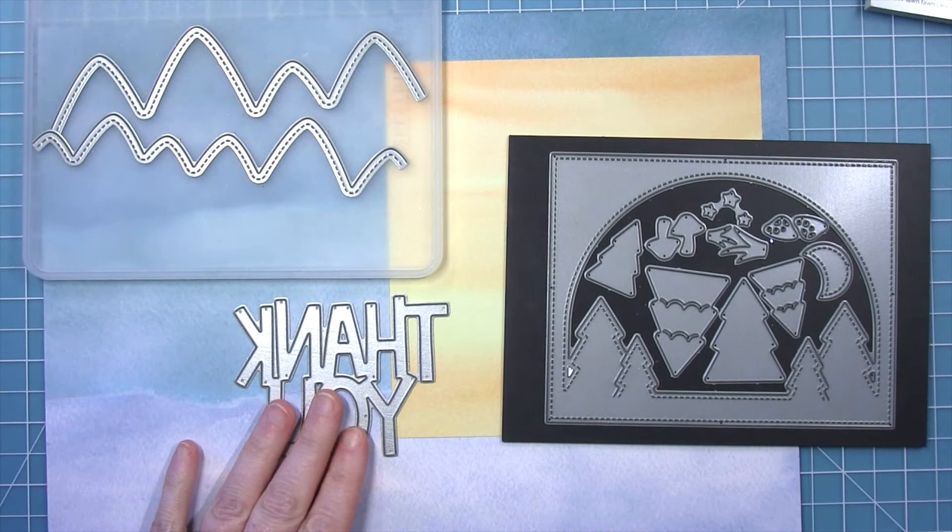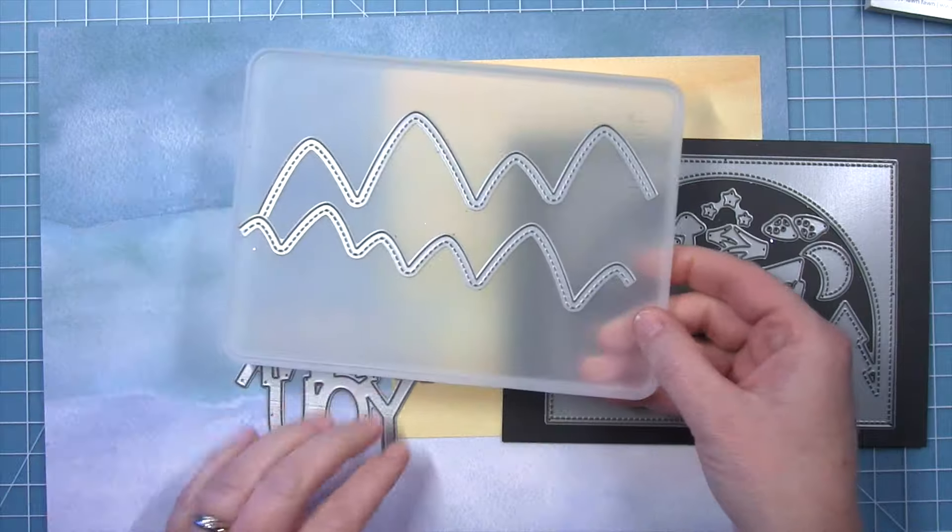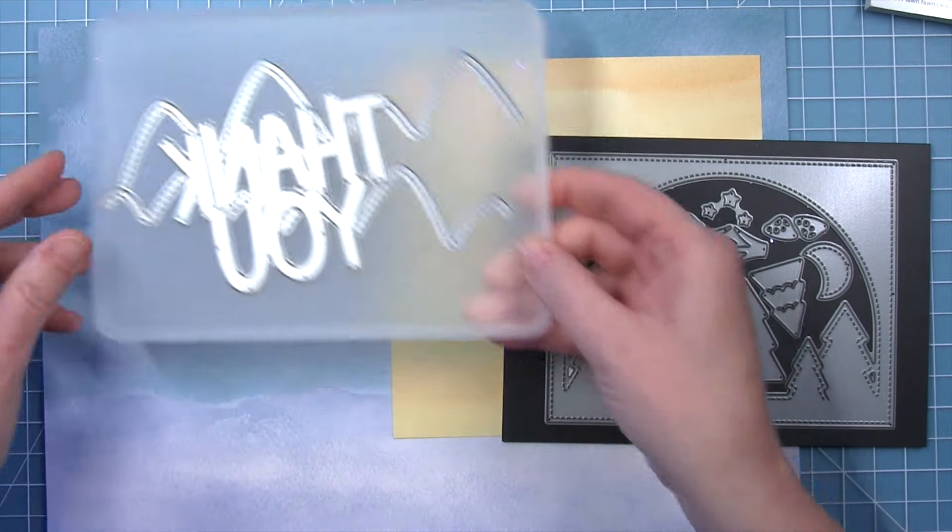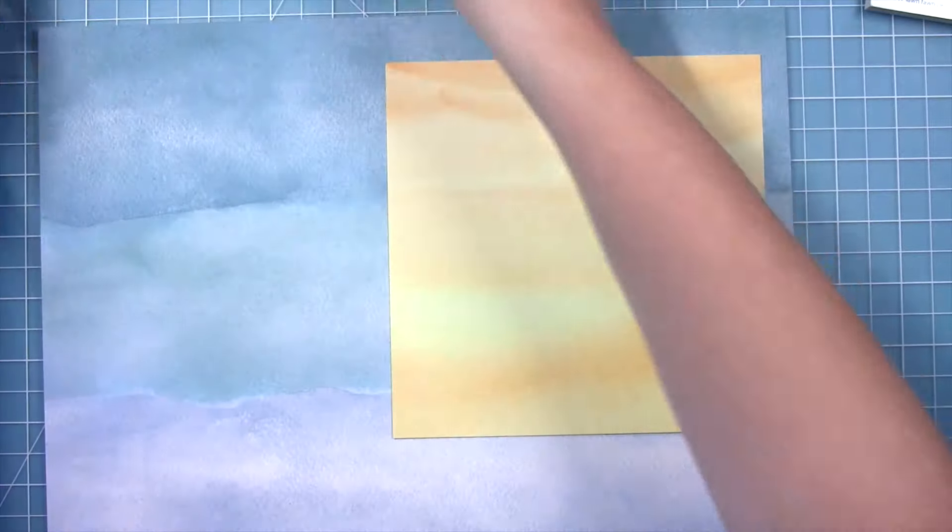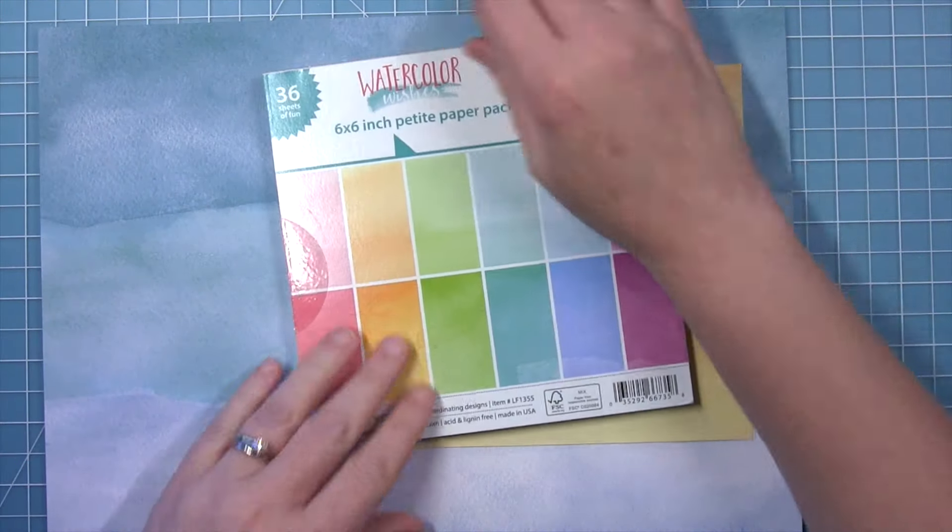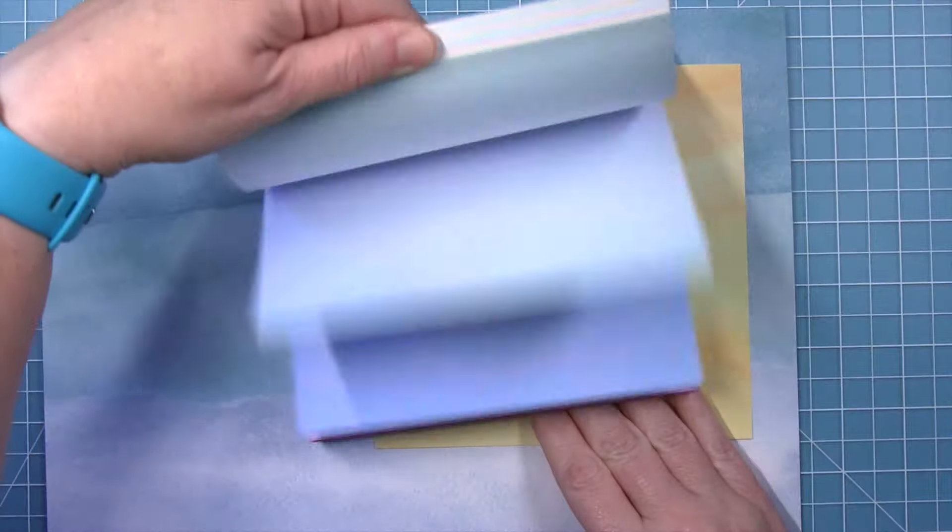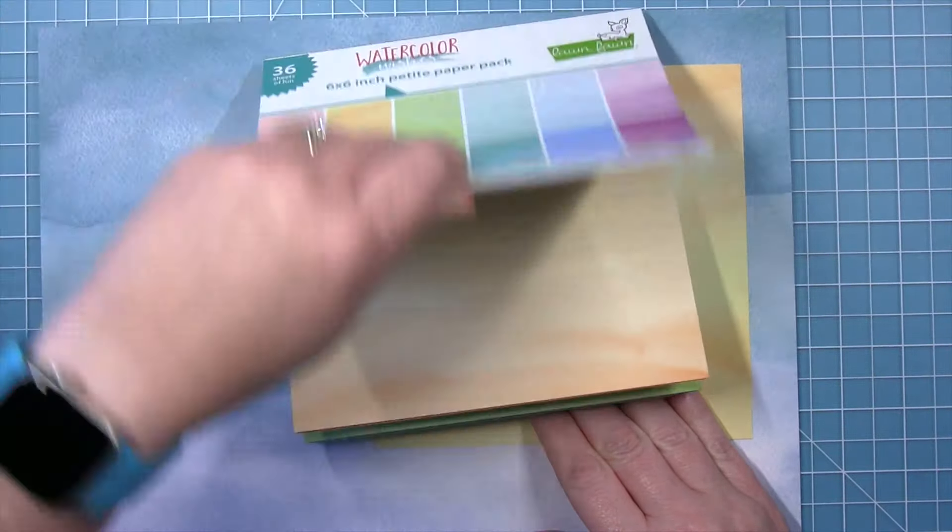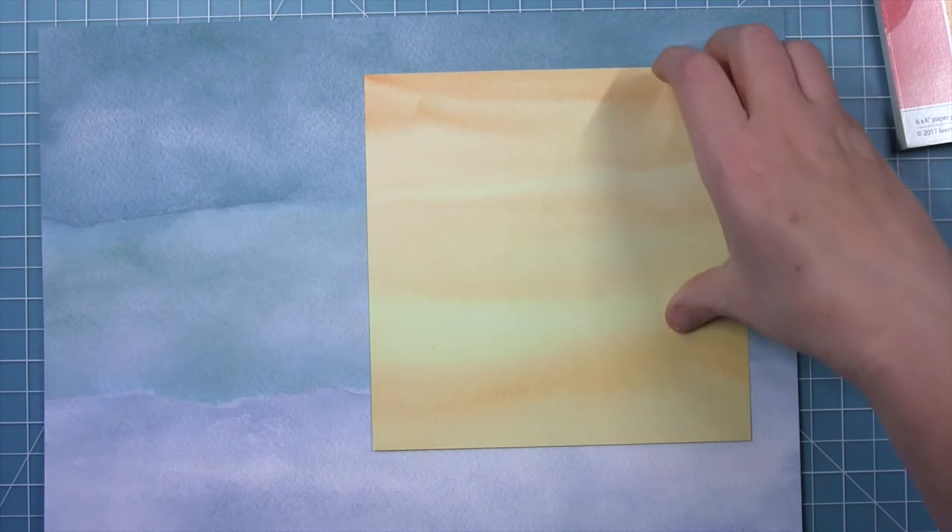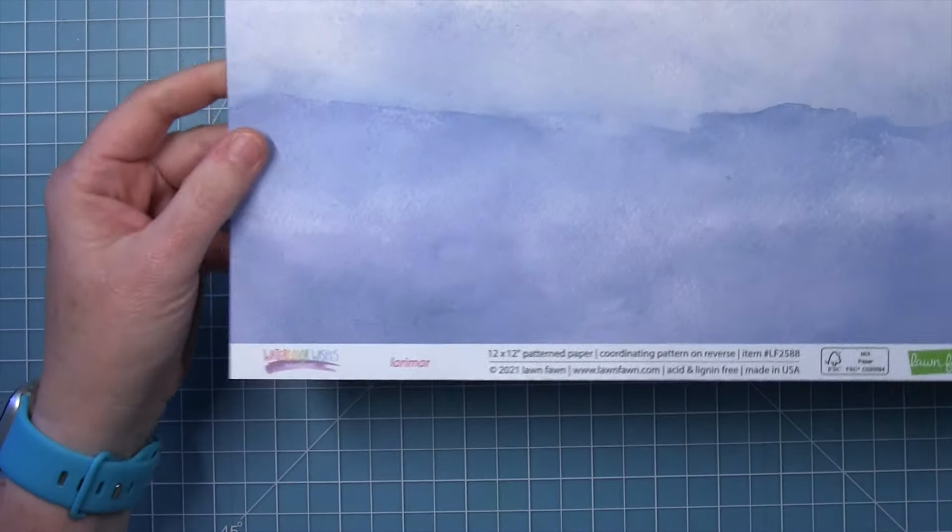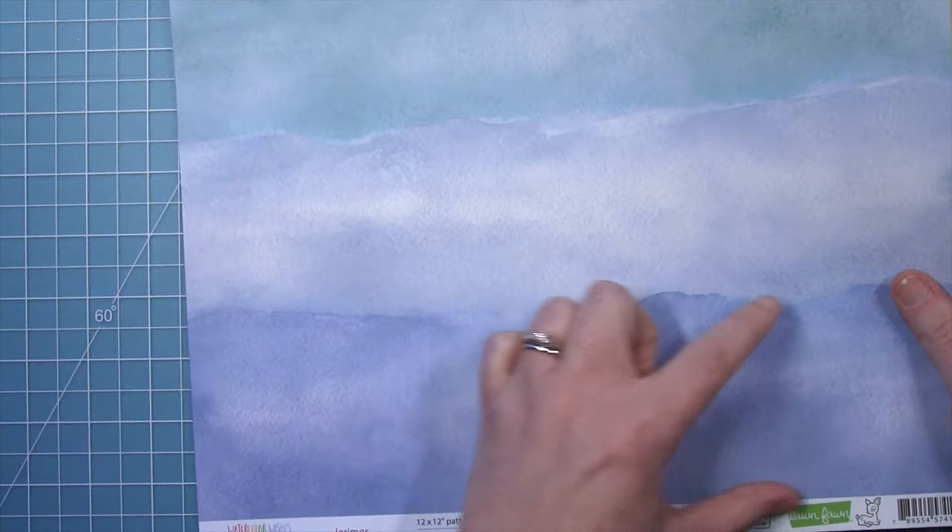So here are some of the things I'm going to use for my card today. I have the giant thank you, of course, the mountain border dies, and the forest backdrop. For my background sky, I'm using watercolor wishes and I pulled out that lighter yellow paper. This is going to be kind of a sunset sky in the background.